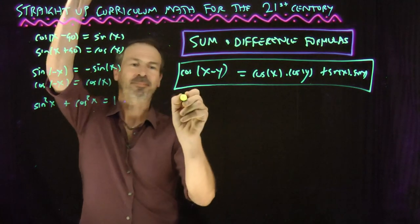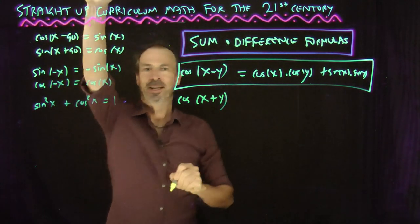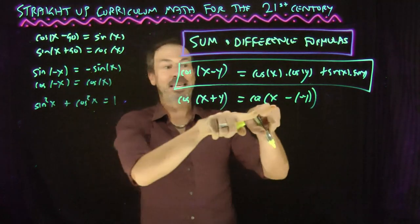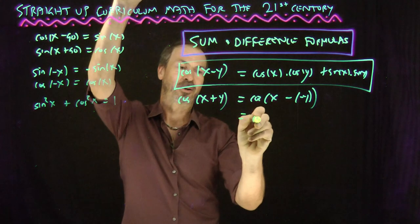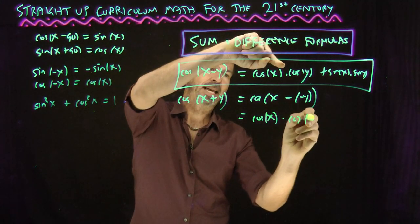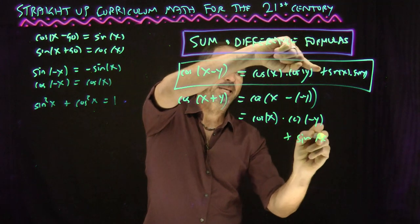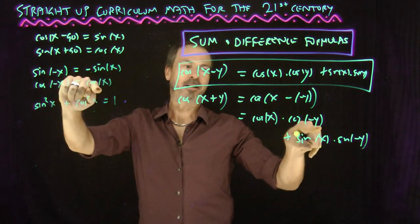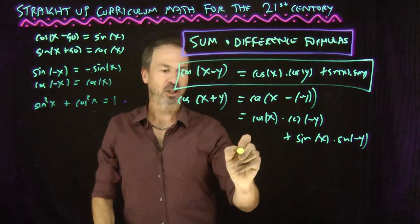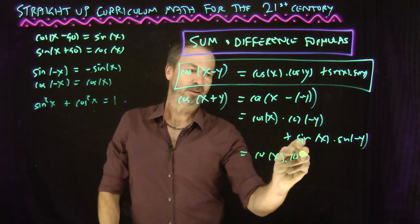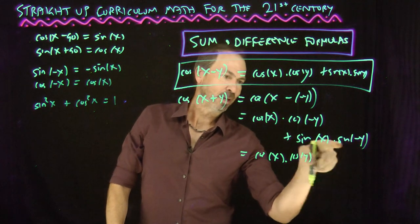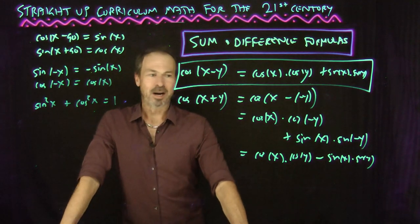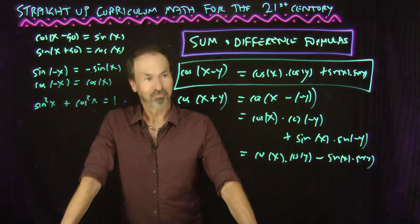Now getting other formulas from that. Cosine of x plus y: think of that as cosine of x minus (−y). Now it's the difference of two angles, so copy that formula: cosine of x · cosine of (−y) plus sine of x · sine of (−y). Cosine of negative y doesn't change, but sine of negative y is the opposite. So this becomes cosine x · cosine y minus sine x · sine y. Cosine of x plus y equals cos x·cos y minus sin x·sin y.